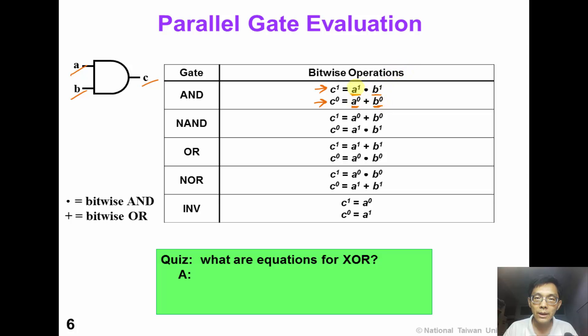The reason is that output is 1 only when both A is 1 and B is 1. On the other hand, output C is 0 when either A is 0 or B is 0. In the same way, we can write the equation for the OR gate. C1 equals A1 plus B1 and C0 is A0 AND B0. We can see the dual relationship between the AND gate and the OR gate.